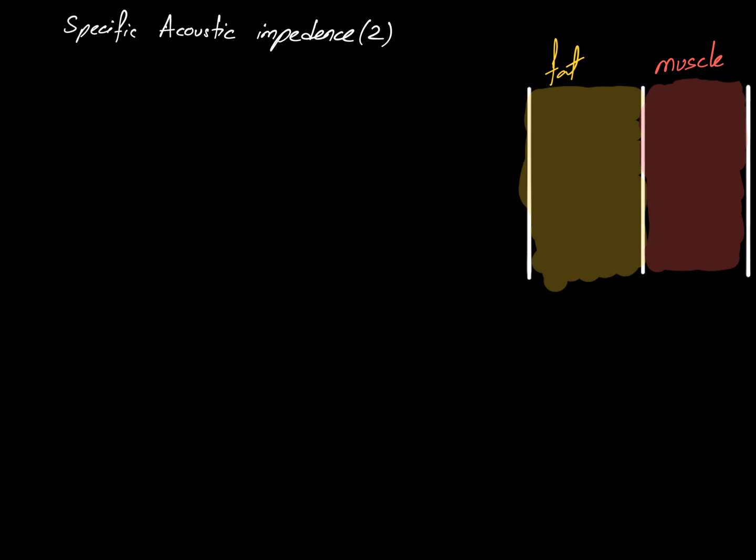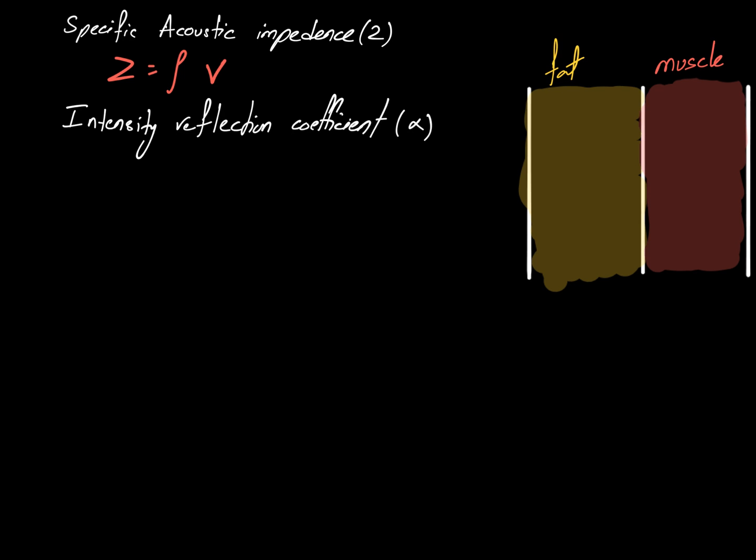The first terminology we'll study is called specific acoustic impedance, or Z. Specific acoustic impedance is basically the product of the density of the material or medium and the speed of sound in that medium. That medium can be air, muscle, or fat.